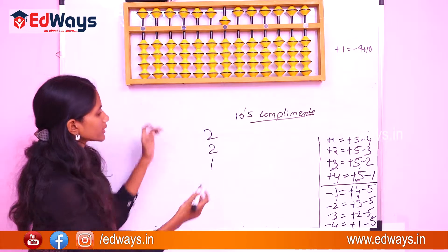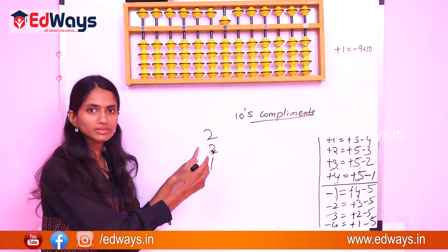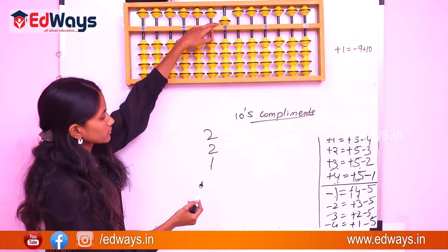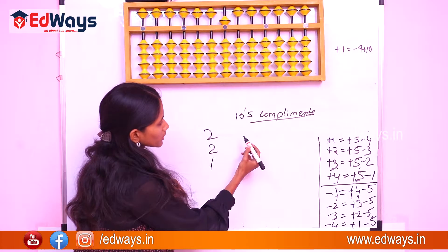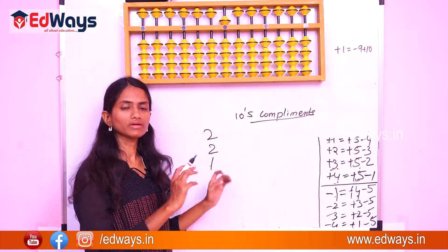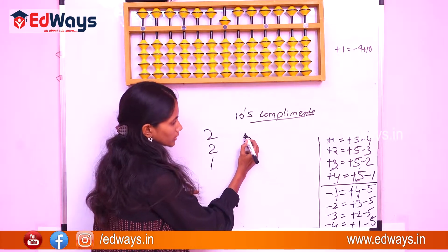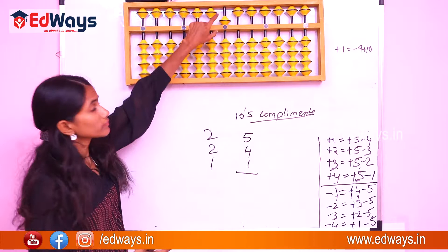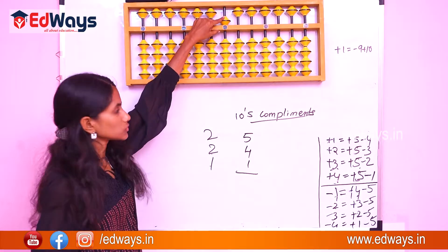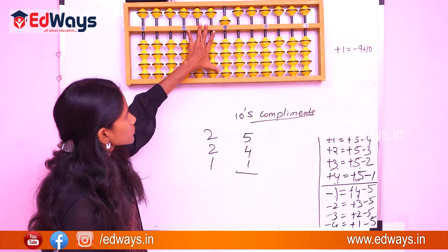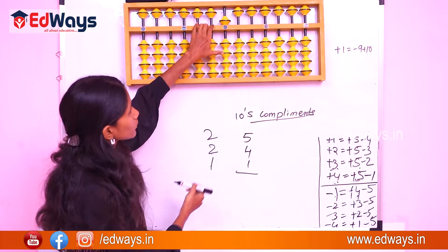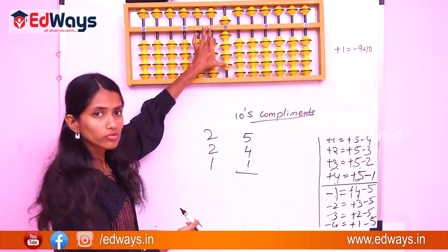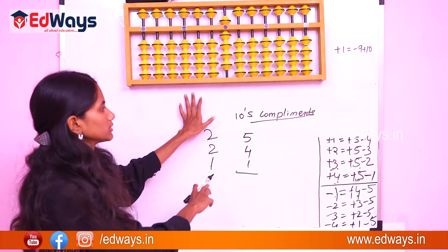Let us take the previous sum: 2 plus 2 plus 1, the answer is 5. Now suppose we are given a sum of 5 plus 4 plus 1. So 5 is already there on the Abacus. Now plus 4 — adding 4 means turning 4 beads upward: 1, 2, 3 and 4. This is already discussed.